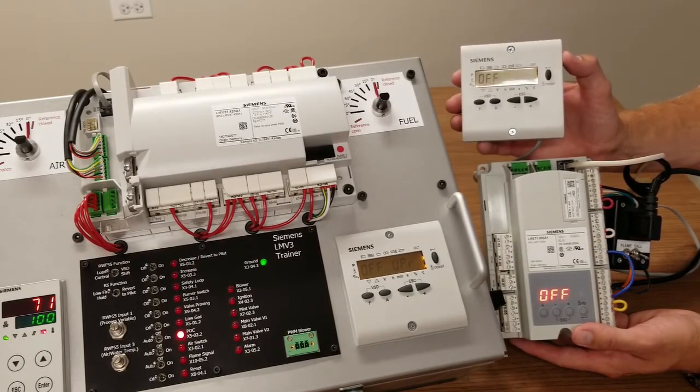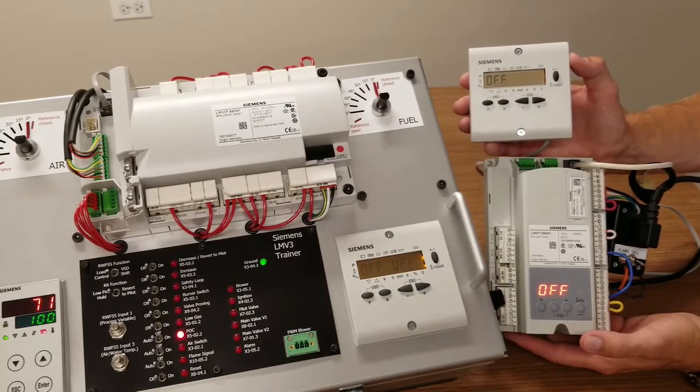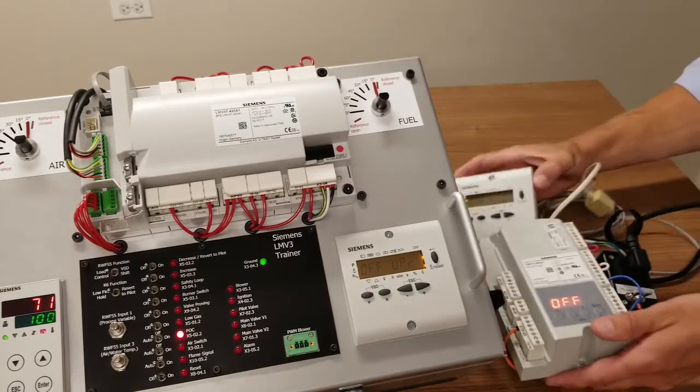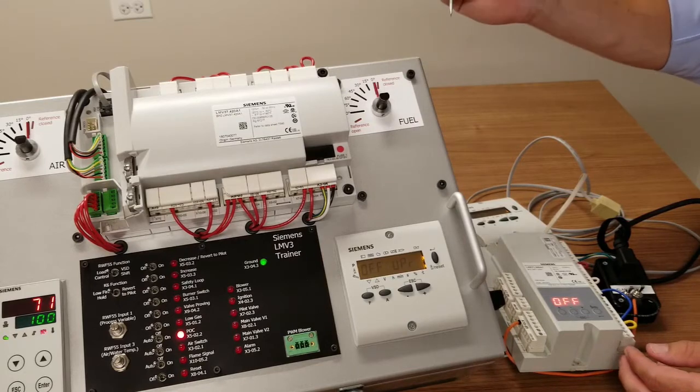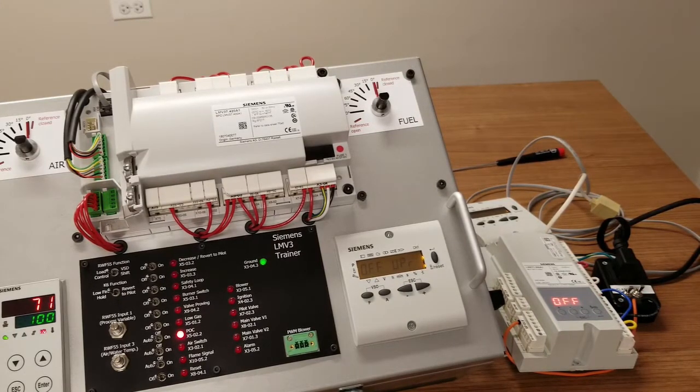You can see the display is backlit and reads off, which mimics what the LME-7's onboard display reads. The LME-3 may often read off UPR, as shown here, if it's not yet programmed, or either of the displays may read a phase or a lockout code, depending on the status of the burner while it's in operation.